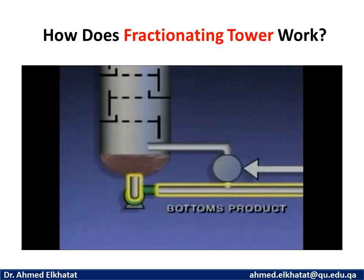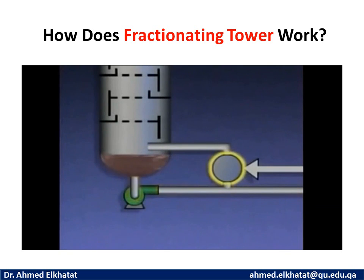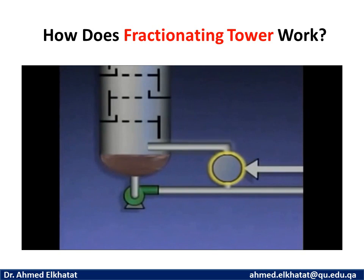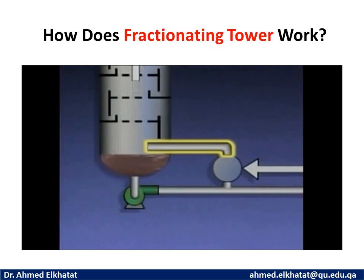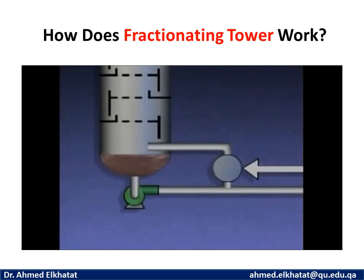Some of this liquid is drawn off as the bottoms product, and some of it is routed to a device called a reboiler, which is connected to the bottom of the tower. The reboiler is usually a heat exchanger designed to vaporize the lighter components that remain in the liquid from the bottom of the tower. Vapors from the reboiler, or in some cases a mixture of vapors and liquid, re-enter the tower and rise up. These vapors and the heat they contain are often referred to as boil-up, which provides the heat needed for the distillation process to take place in the tower.